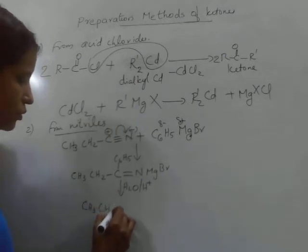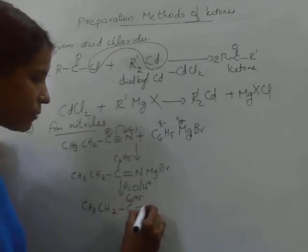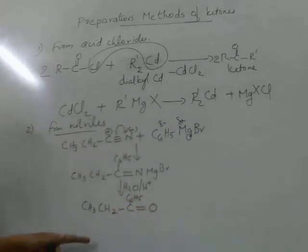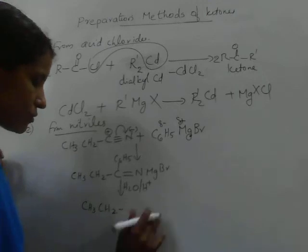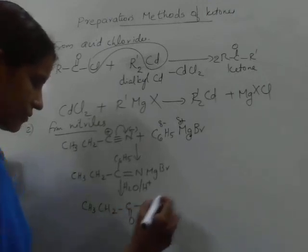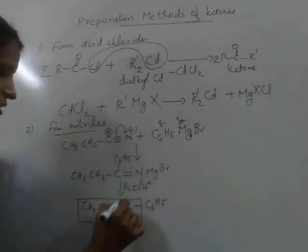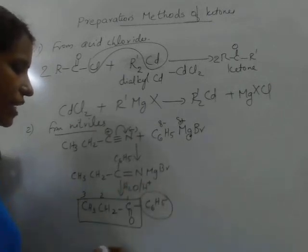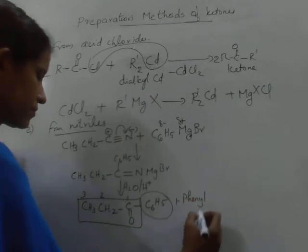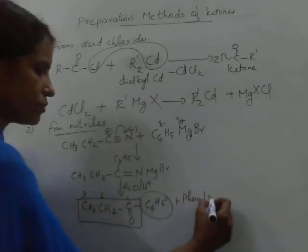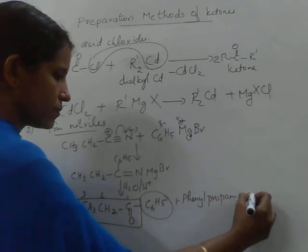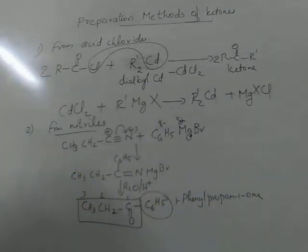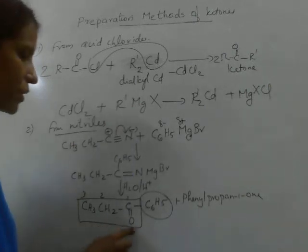The ketone product obtained is CH₃CH₂C(=O)C₆H₅. The parent chain has three carbons numbered 1, 2, 3; at carbon 1 there is a phenyl substituent, so it is named 1-phenylpropan-1-one. Its common name is propiophenone.